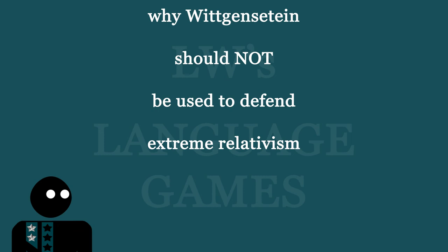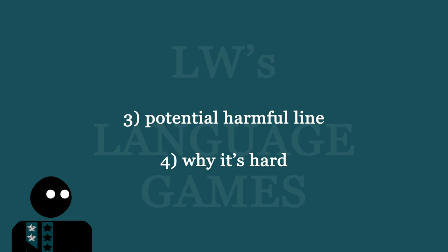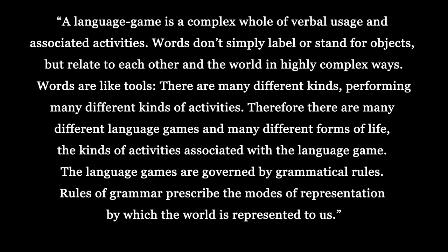This video is quite long, so let's get to those final goals. Let's talk about why the ending line of O'Grady's writing — where he tries to explain what Wittgenstein's language game is — is potentially harmful. Let me read that section: 'A language game is a complex whole of verbal usage and associated activities. Words don't simply label or stand for objects, but relate to each other and the world in highly complex ways. Words are like tools — there are many different kinds performing many different kinds of activities. Therefore there are many different language games and many different associated forms of life. The language games are governed by grammatical rules. Rules of grammar prescribe the modes of representation by which the world is represented to us.'